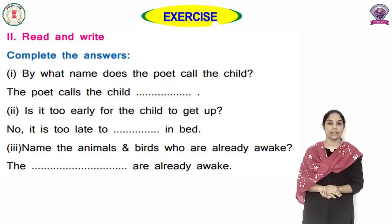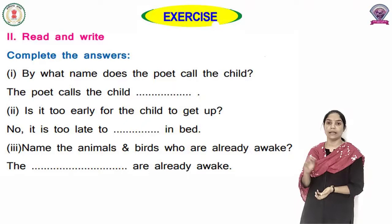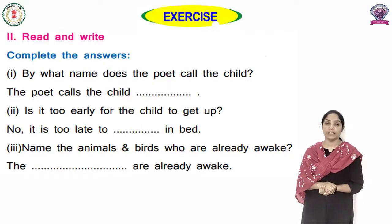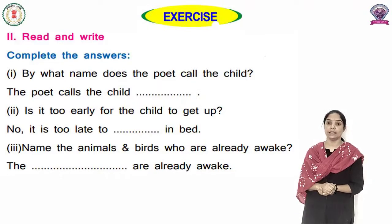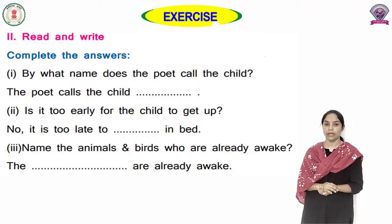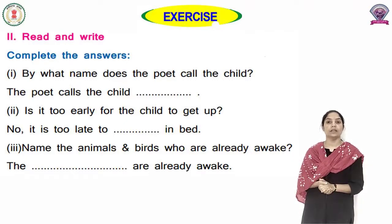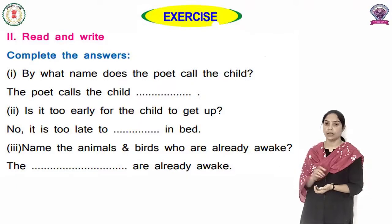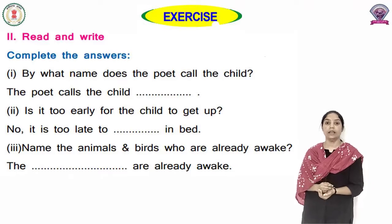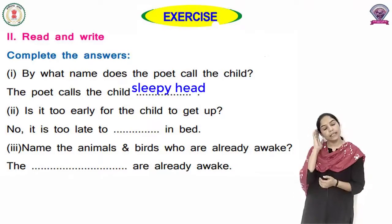ठीक है? अब हम next exercise करते हैं। इसमें क्या करना है तुम्हें — Read and write, complete the answers। इसमें तुम्हें कुछ questions दिये हैं और उसके answers भी दिये हैं लेकिन answers complete नहीं हैं जहां पर तुम्हें उसे complete करना है। पहला question क्या है — By what name does the poet call the child? इसका answer है: The poet calls the child sleepyhead।